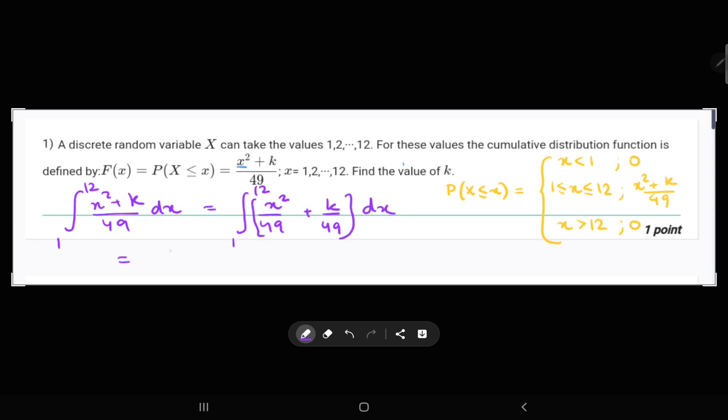Integrating it separately, we will get our answer: x³/(3 × 49) from 1 to 12, plus kx/49 from 1 to 12. What we can conclude is that the area of the graph for any polynomial, a cumulative polynomial, would be 1 in total.